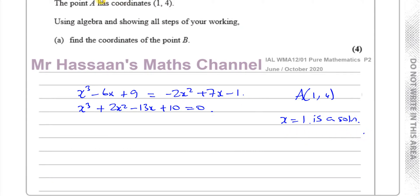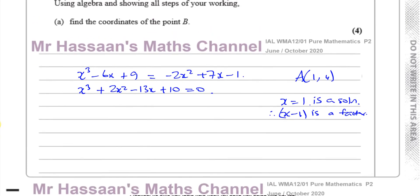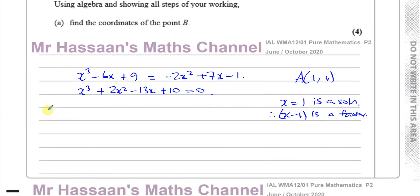Therefore x minus 1 is a factor. Knowing this, we can find the other factors using algebraic long division or inspection. Let's start with algebraic long division, dividing x minus 1 into the cubic.